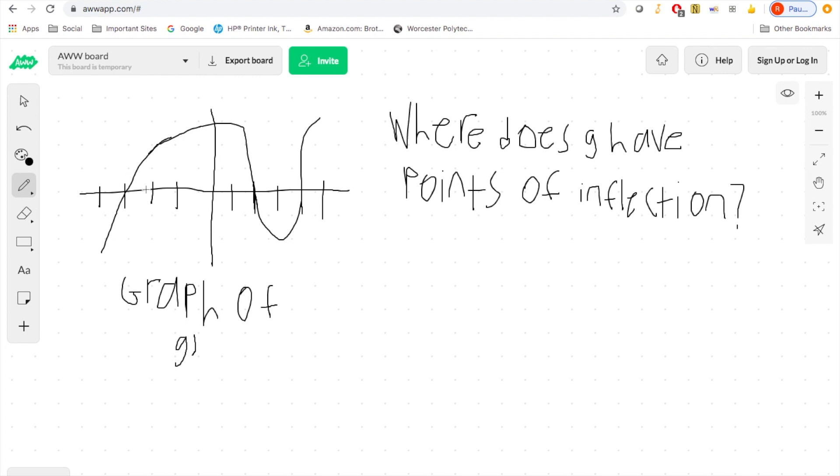Once again I'm sorry about my graph here, it's definitely not very precise but nonetheless it's a graph, and it's a graph of g prime. The question that we're trying to answer in this example is where does g have points of inflection, and let me specify that by where does g have points of inflection I mean the x coordinates where g has points of inflection.